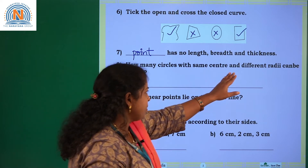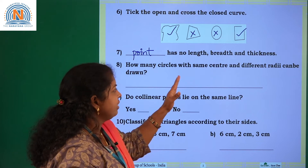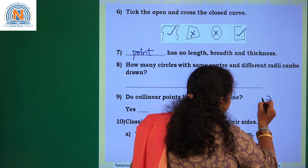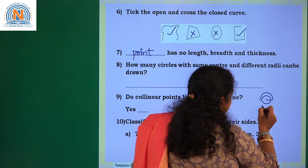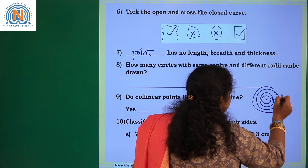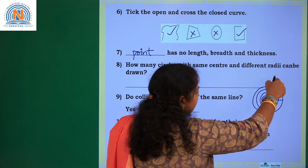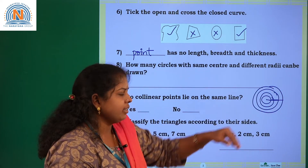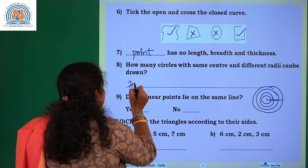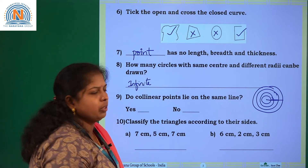How many circles with the same center and different radii can be drawn? The center is the same but the radius is different — how many can you draw? You can draw an infinite number of circles. The center will be the same but the circles are different in size. You can draw as many as you want — infinite, or you can say uncountable.